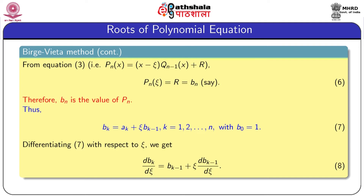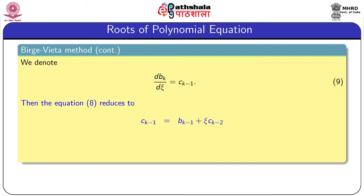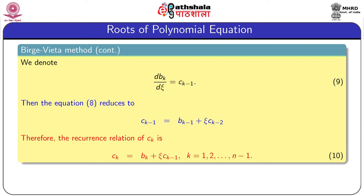For simplicity, we differentiate the recurrence relation b_k = a_k + ψ·b_(k-1) with respect to ψ, obtaining d(b_k)/dψ = b_(k-1) + ψ·d(b_(k-1))/dψ. Note that a_k is constant, so its derivative is 0. Using the notation d(b_k)/dψ = c_(k-1), the recurrence relation for c_k becomes: c_k = b_k + ψ·c_(k-1), for k = 1 to n − 1. From this equation we can evaluate all c's, and from the b recurrence we evaluate all b's.